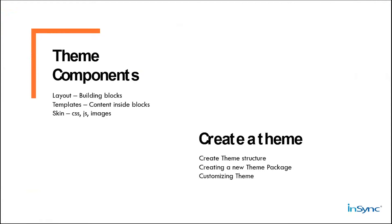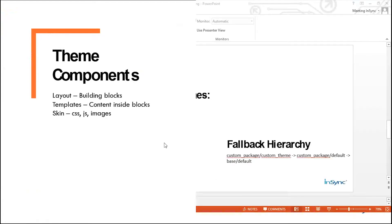Now, what are the theme components? The main theme components are layout, template, and skin. In Magento, layouts are just XML files — they define the structure of Magento. Inside the layout are template files which show what content will be present inside the blocks that the layout defines. The skin section contains all the CSS, JS, and images we want to use.